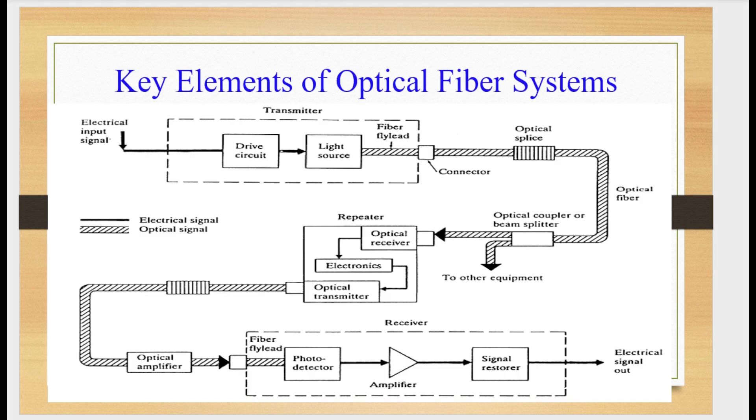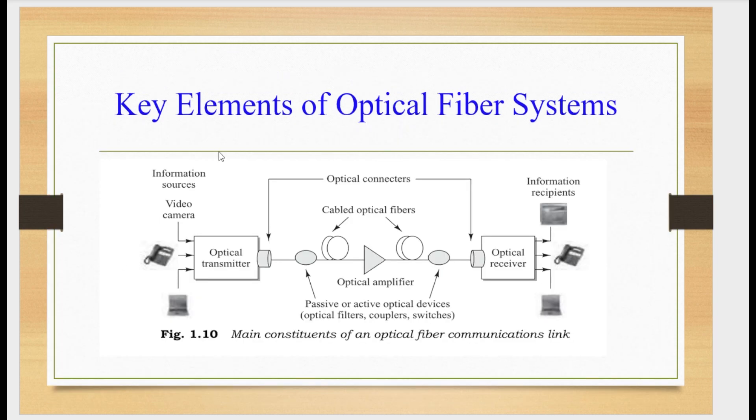This diagram is very complicated to draw in exams. That's why in 5th edition this simple diagram is given, which is very simple to draw in your examination. That is optical transmitter, optical amplifier, then passive or active optical devices. That is optical filter, couplers, switches, optical receiver.